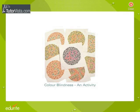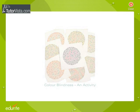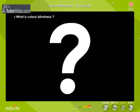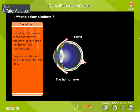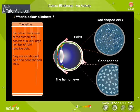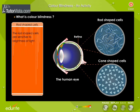What is color blindness? The retina, the screen of the human eye, consists of a very large number of light-sensitive cells. They are rod-shaped cells and cone-shaped cells. The rod-shaped cells are sensitive to brightness of light.